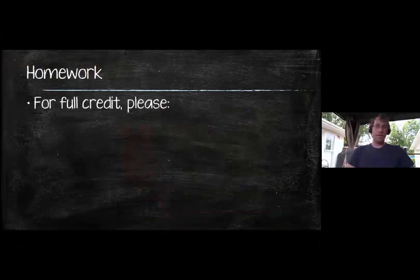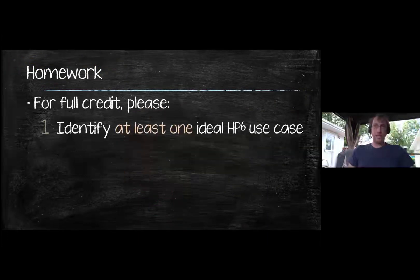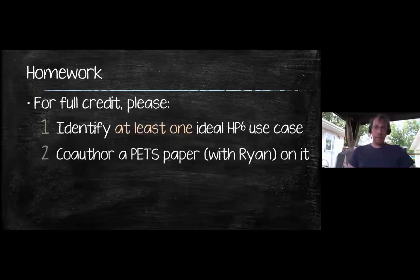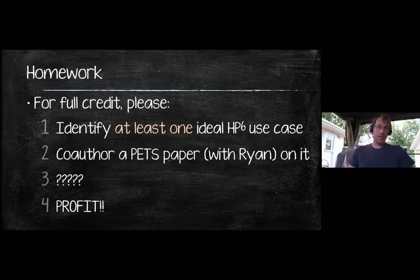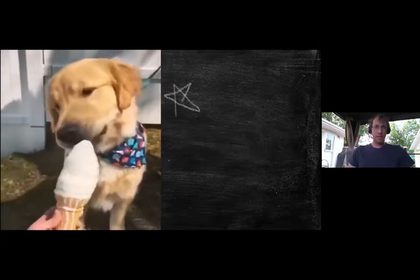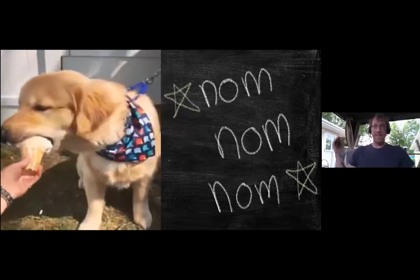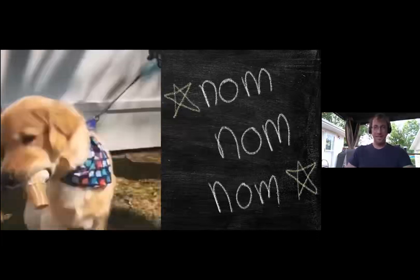Okay, so that was most of what I wanted to say. For your homework, if you want full credit, there's four things you need to do. Step one is identify at least one ideal HP6 use case. Think about all the different problems you've considered in the past and see if any of them might be suitable in this particular model. Step two is coauthor a PETS paper with me about said topic. Step three is get tenure. And then four is profit. Cause I guess it comes with a bit of a raise and now I'm going to do what nobody better dare do next year at HotPETS. I'm going to steal Michael and Voter's thunder by proclaiming this to be the end of HotPETS. All right, let's get this discussion going.